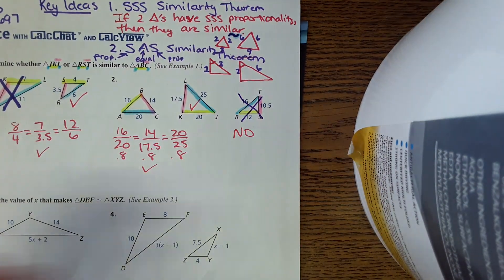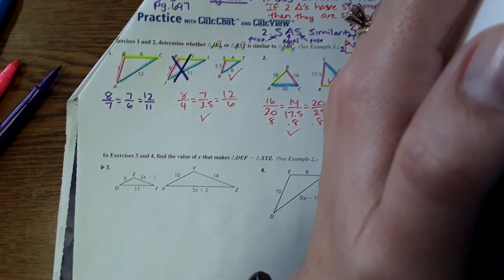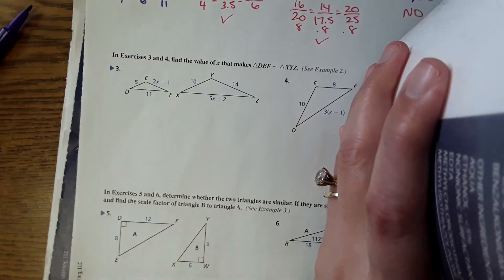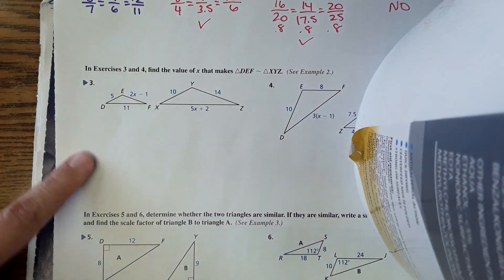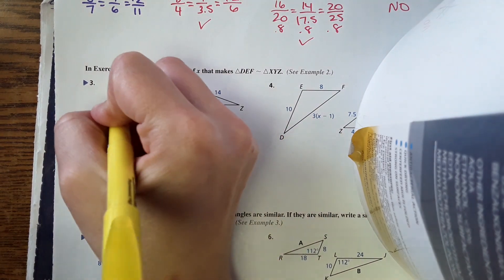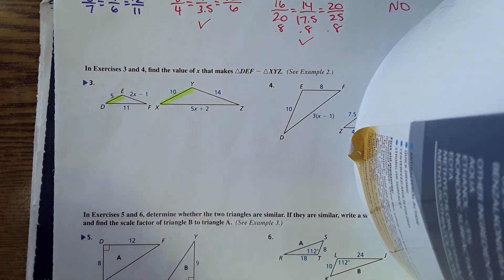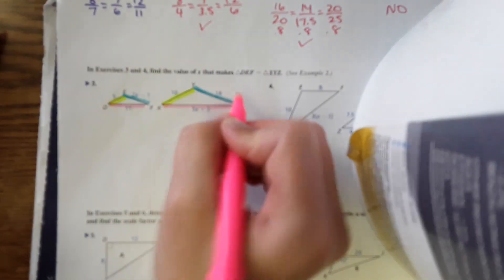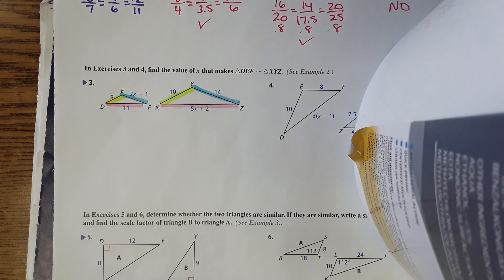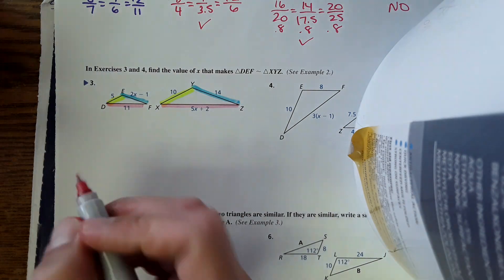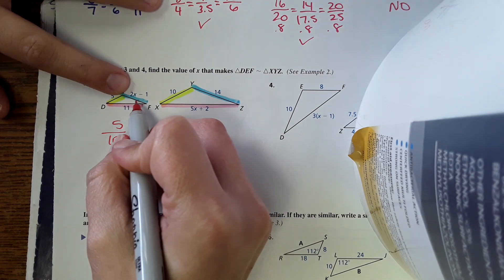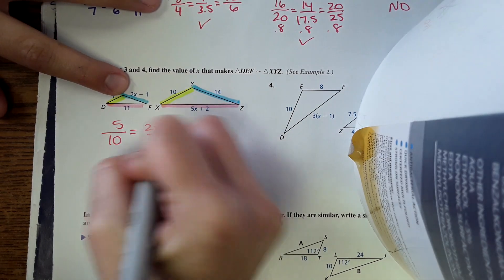We're going to move on to the next type of problem. Number three says: find the value of X that makes these similar. Match corresponding to corresponding — this goes with this, this goes with this, and this matches with this. We are going to set up proportions and then solve for X. As long as we're consistent, we're good. I'm going to do the first over the second: 5 over 10 equals 2X minus 1 over 14.